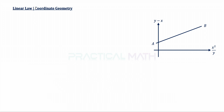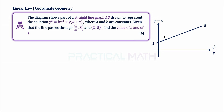This video is about linear law and coordinate geometry. In part A of this question, a diagram has a vertical axis of y minus x and horizontal axis of x squared over y. A straight line graph AB is drawn to represent the equation y squared equals hx squared plus y(k plus x), where both h and k are constants. Given that the line passes through coordinates (1/2, 3) and (2, 5), find the value of h and k. That's a four-mark question.